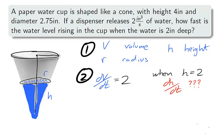Two. dV/dt, the rate of change for the volume of the water, is 2 cubic inches per second. When h is 2 inches, we are to calculate dh/dt, the rate of change for the height of the water.